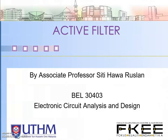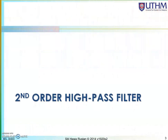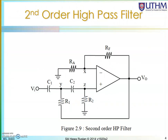Hello, we continue with another topic in active filters, but this time it is on the second order high pass filter. Shown here is a circuit which is a second order high pass filter. You can see it is second order since you have two pairs of RC in the circuit. It is also a non-inverting amplifier since the input is coming to the positive input of the op-amp.